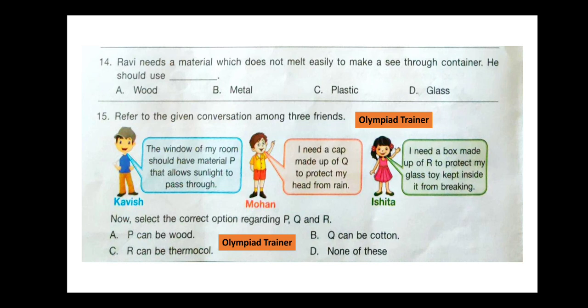Question 14. Ravi needs a material which does not melt easily to make a see-through container. He should use — the correct answer is option D — glass.